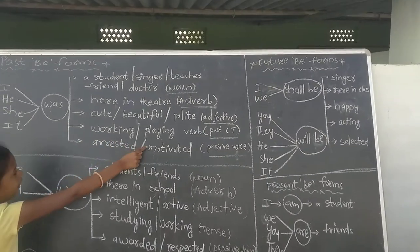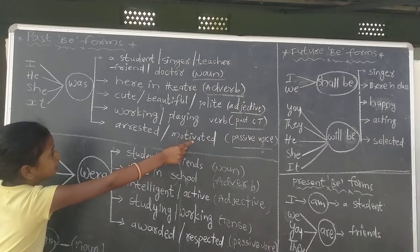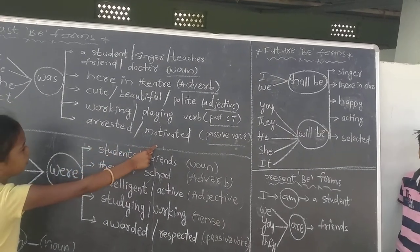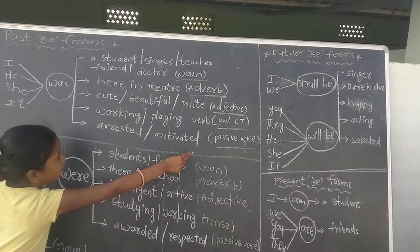I was working, playing, work - past continuous tense. I was arrested, motivated - passive voice.